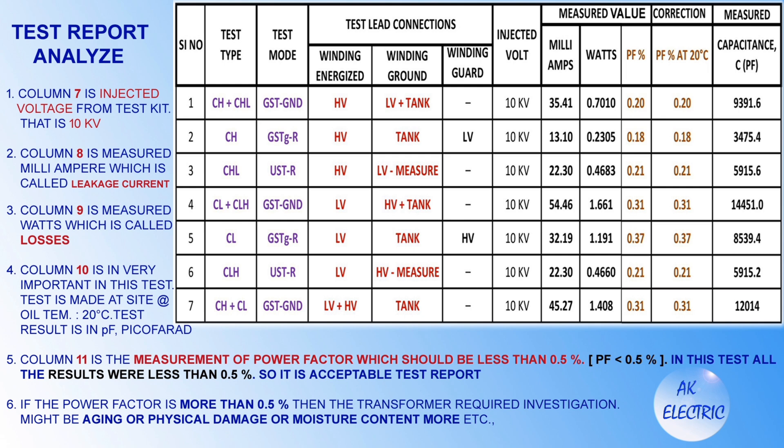Analyzing the overall test report: Column 7 is the injected voltage from the test kit — 10 kV. Column 8 is measured milliampere, which is the leakage current. Column 9 is measured watts, which represents losses. Column 10 is very important — the test is made at oil temperature 20 degrees Celsius, and results are in picofarad. Column 11 is the measurement of power factor, which should be less than 0.5%. In this test all results were less than 0.5%, so it is an acceptable test report. If the power factor is more than 0.5%, the transformer requires investigation — it might indicate aging, physical damage, or excessive moisture content.